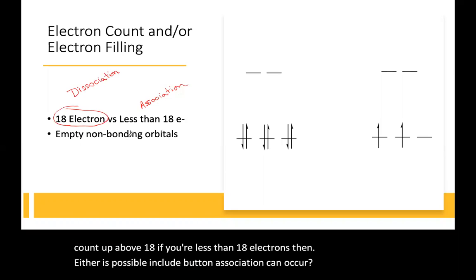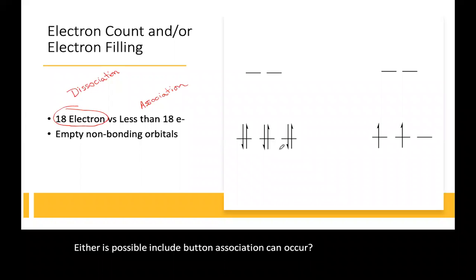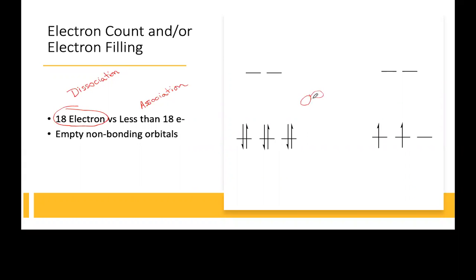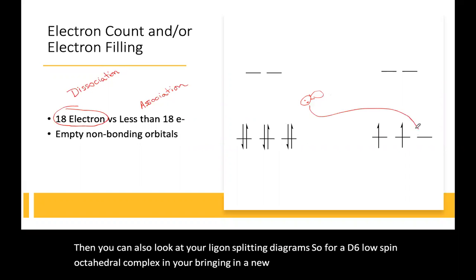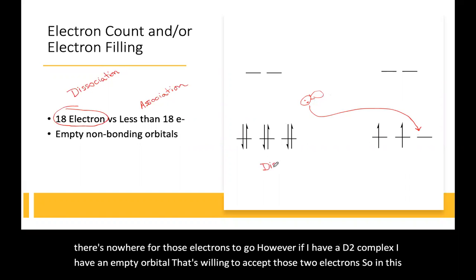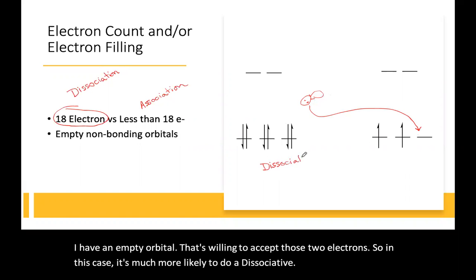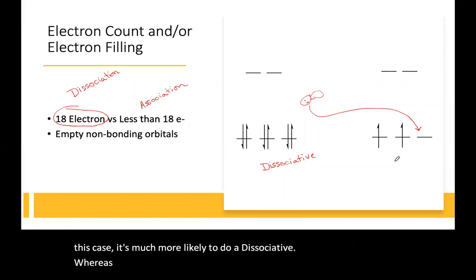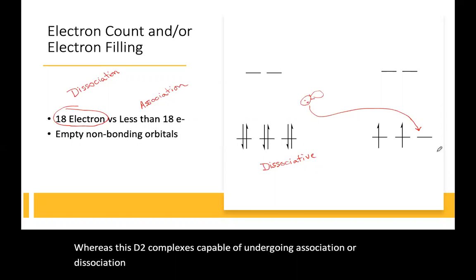You can also look at ligand field splitting diagrams. For a D6 low-spin octahedral complex, bringing in a new ligand for an association step won't work because there's nowhere for those electrons to go. However, a D2 complex has an empty orbital willing to accept those two electrons, so it's much more likely to undergo association, whereas the D6 complex leans toward dissociation.